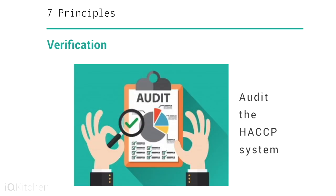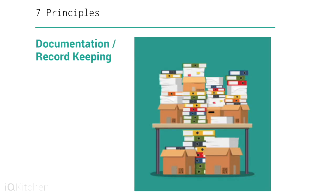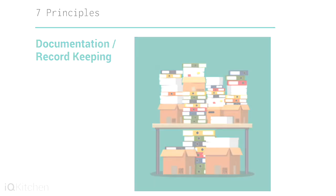Principle 6: Verification. Those activities other than monitoring that determine the validity of the HACCP plan and that the system is operating according to the plan. Principle 7: Documentation. A key component of the HACCP plan is recording information that can be used to prove that the food was produced safely.